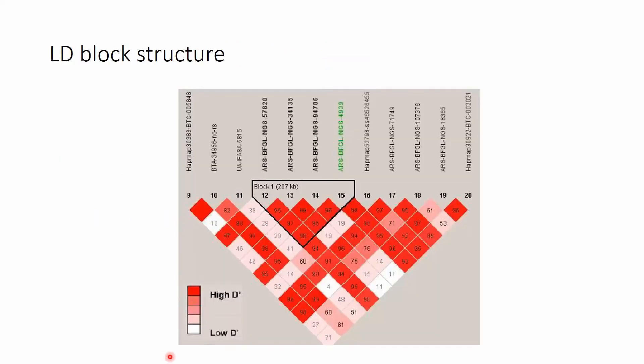Here is an example of part of a genome shown as a heat map, where darker colors represent high LD and lighter colors represent low LD. It is measured with D' in this example.